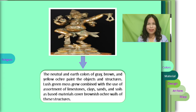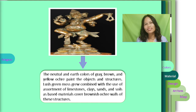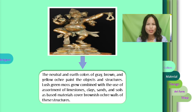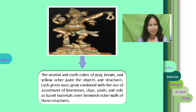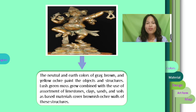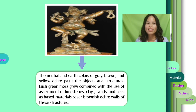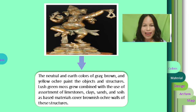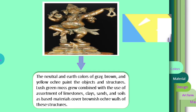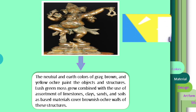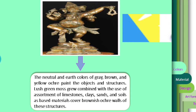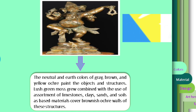The colors may vary from neutral and earth tones of gray, brown, and yellow ochre painted on the objects and structures. Lush green moss combined with the use of an assortment of limestone, clay, sands, and soil-based materials cover the brownish ochre walls and structures. The limestone and clay make a solid base for the object, and it is also painted to make it shiny. Lush means luxuriant, succulent, tender and juicy — of vegetation, plants, grasses, etc. Ochre is a natural clay earth pigment which is a mixture of ferric oxide.